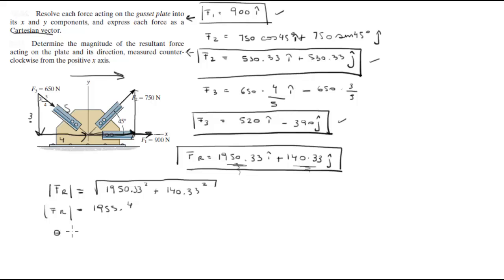And if you want to find the angle that it forms with the X, you do the tangent inverse of 140.33 over 1950.33, and you're going to get that the angle is very small, 4.12 degrees.